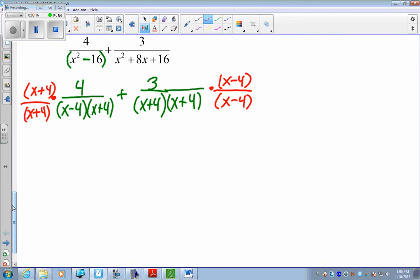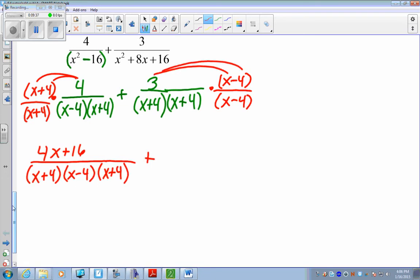Multiply it in. The numerators. Always simplify the numerators. So, 4 times x plus 4 is 4x plus 16. Denominators. I don't multiply those in. Leave those as factors. Plus, distribute this 3 in. 3x minus 12. Again, denominator. Don't actually multiply them all. Just keep them as factors. Now, we have like denominators.